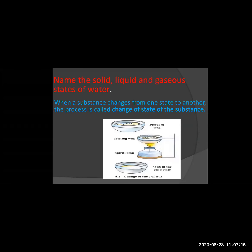Similarly, water — when you keep it in the refrigerator, it turns into solid, that is, ice cubes are formed. When you boil the water, you can see the vapors; the water evaporates through the boiling process. That is called gaseous. So there are three states of a substance: solid, liquid, and gaseous. When substances change from one state to another, this process is called change of state of substance.